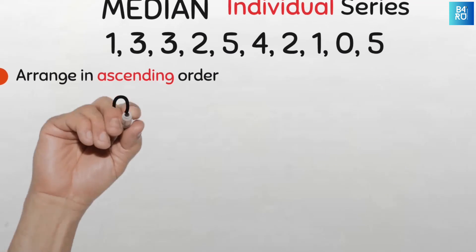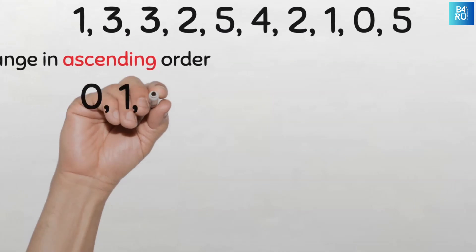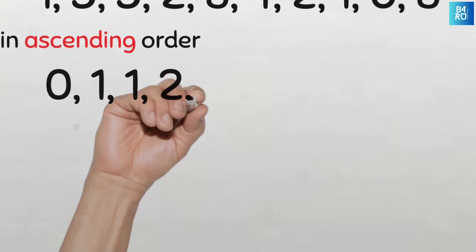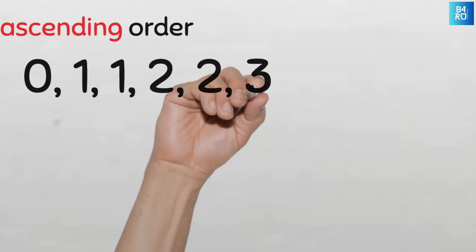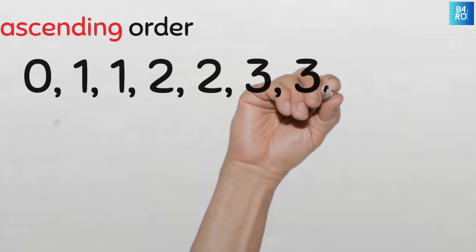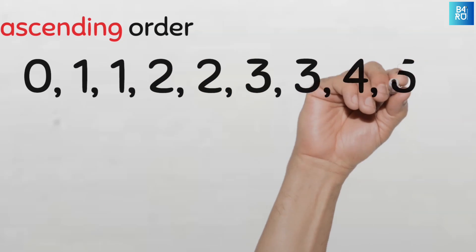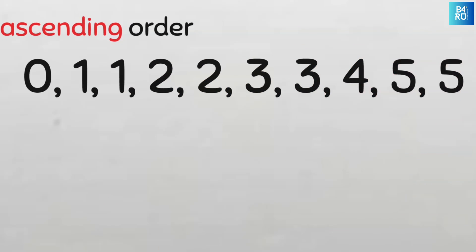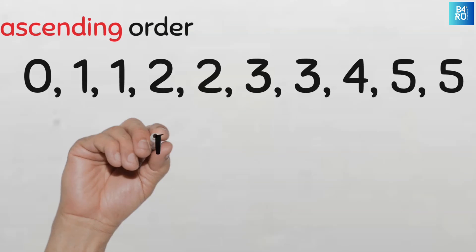So here we'll have 0, 1, 1, 2, 2, 3, 3, 4, 5 and 5. That's 1, 2, 3, 4, 5, 6, 7, 8, 9 and 10. Our number of data elements is 10 and this is an even number.